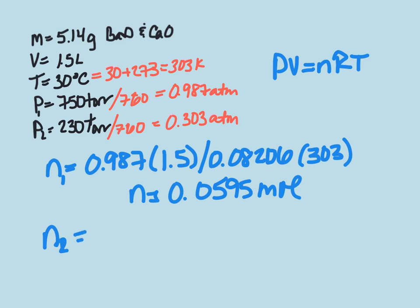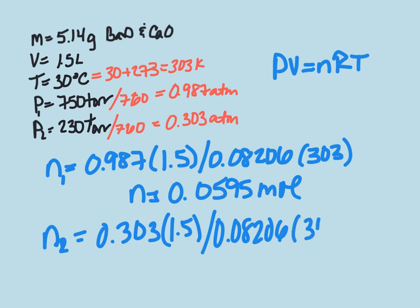The number of moles remaining after our new pressure was 0.303. We still have the same volume of 1.5. Our gas constant is still the same, as is our temperature. And we get that after the reaction, there's 0.0183 moles of CO2 remaining.